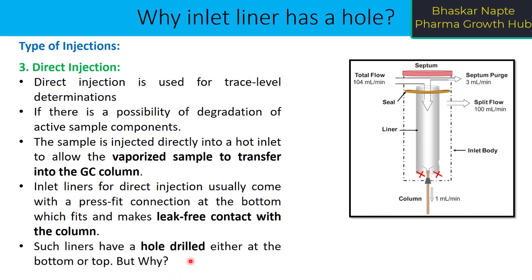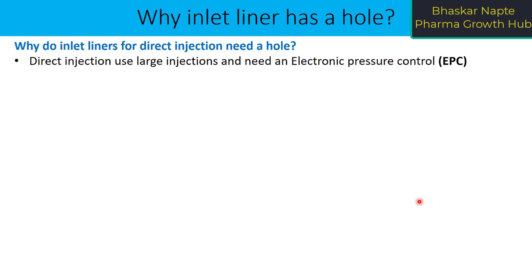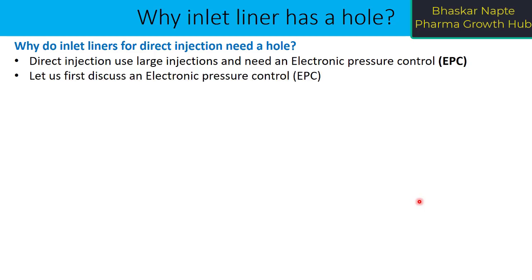Now, such liners have a hole drilled either at the bottom or top. Why? This is the point we are going to talk about today. In this particular diagram I have not shown this hole on the liner, but I want to explain why there is a need for a hole on a liner in direct injection mode. Direct injection uses large injections and needs electronic pressure control. We understand that direct injection is used for trace level component analysis where concentration is low, so you have to go with higher injection volumes like 4 or 5 microlitres, and in such a situation EPC is used.